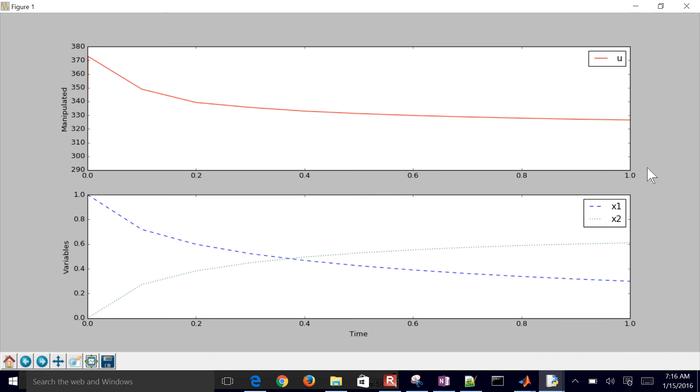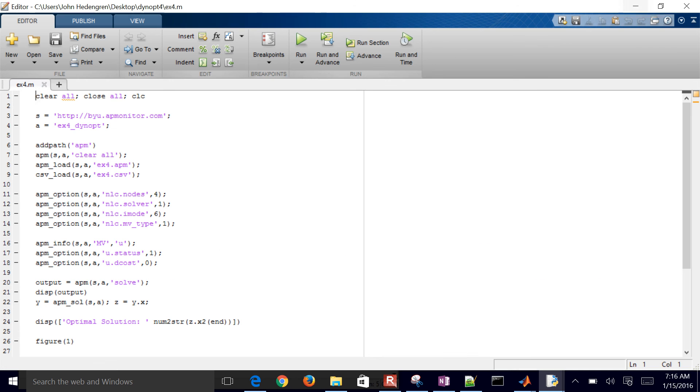And this was the optimal profile of temperature between 0 and 1. So if I went further off into the future, it might change the profile of how I manipulate my temperature to maximize that intermediate product, B, in this A goes to B goes to C reaction.